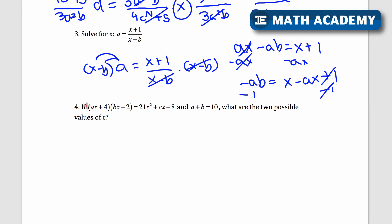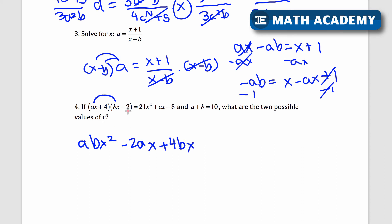So combine like terms on both sides, and then use what you know about the coefficients, compare the coefficients to solve for the answer. The first thing I'm going to do is I'm going to turn the left side into standard form. So I'm going to foil this, ax times bx is abx squared. And then ax times negative 2 is minus 2ax. 4 times bx is plus 4bx. 4 times negative 2 is minus 8. And that is all equal to what's on the right side, 21x squared plus cx minus 8. And it's asking for the two values of c.